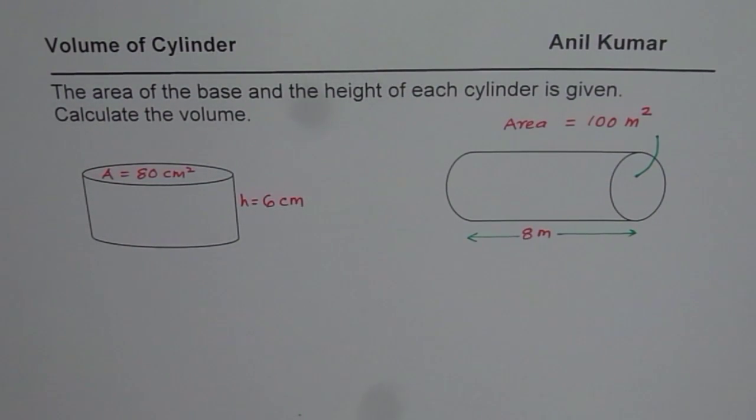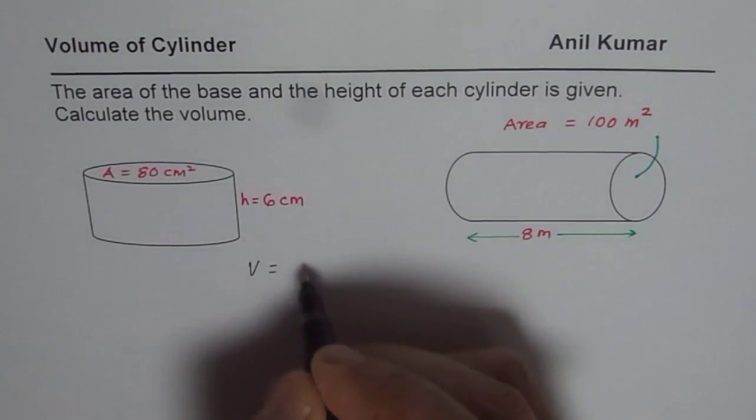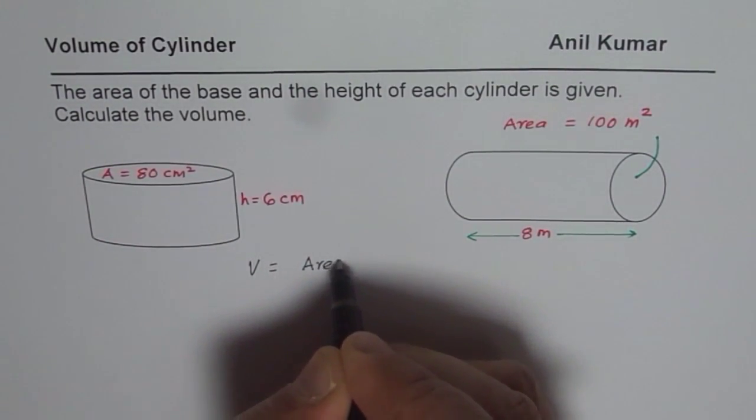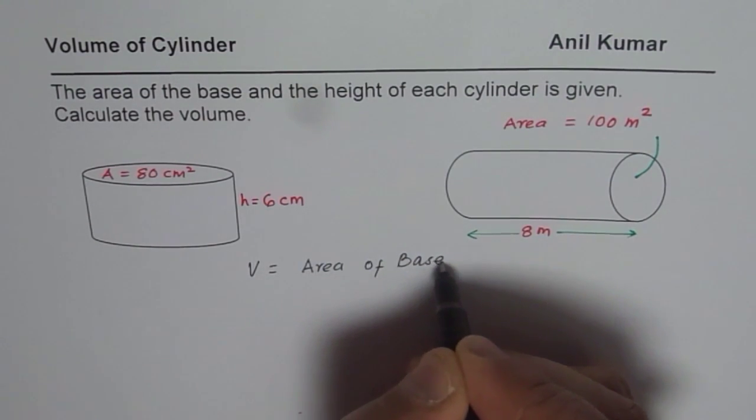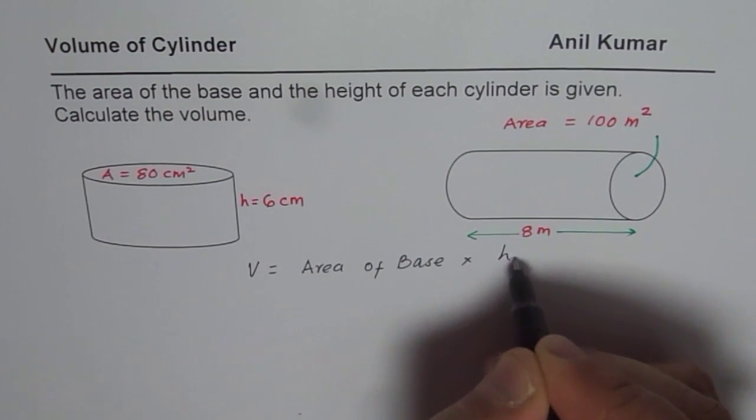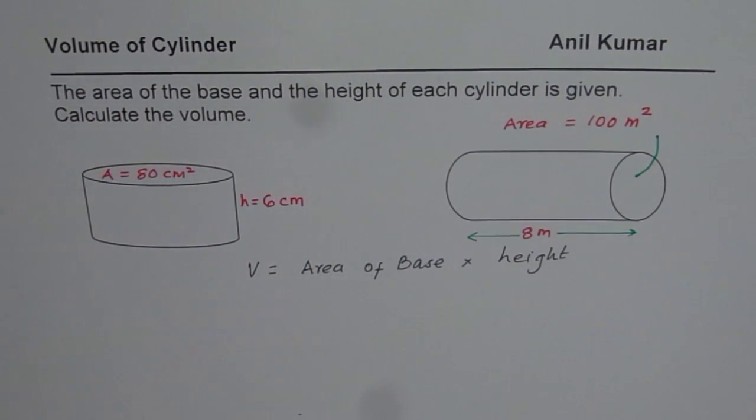Now, I hope you remember the formula for volume. So volume of a cylinder is equal to area of base times height. So you can use this formula and calculate the volume and take care of the units. It is unit cube.